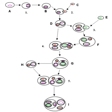Many instances of endosymbiosis are obligate; that is, either the endosymbiont or the host cannot survive without the other, such as the gutless marine worms of the genus Riftia, which get nutrition from their endosymbiotic bacteria. The most common examples of obligate endosymbiosis are mitochondria and chloroplasts.